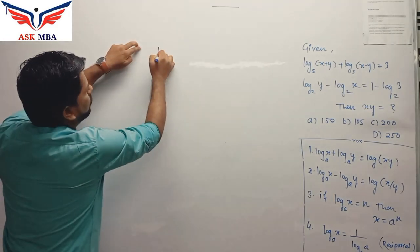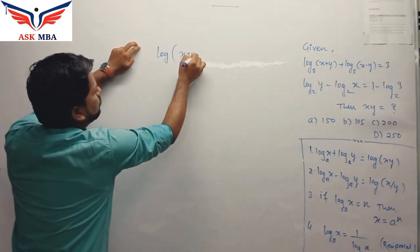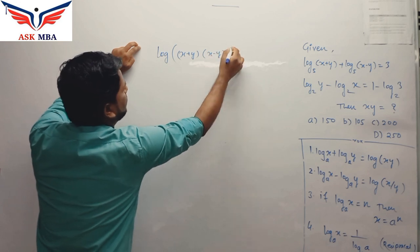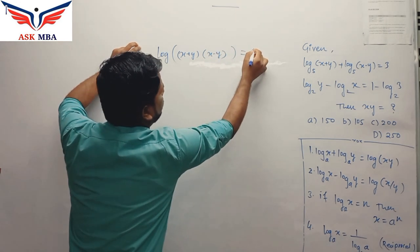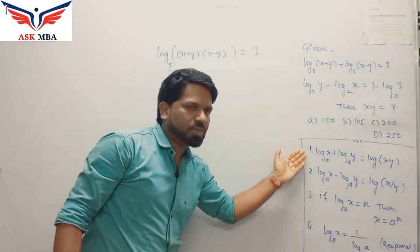So we have base common, so you can use the first property. We have log of product of both the terms, that is (x+y) first term into (x-y) equals to 3 base 5. This is how we are going to use the first property.